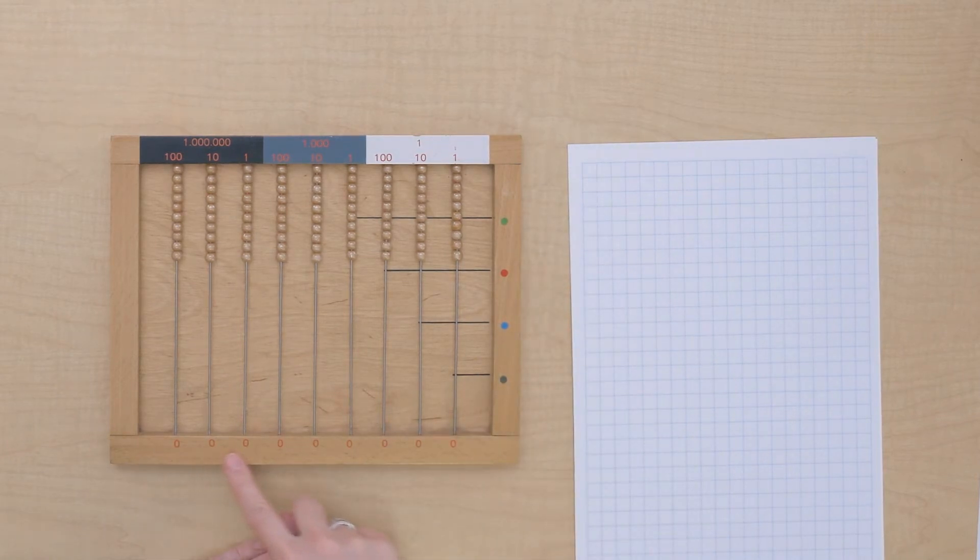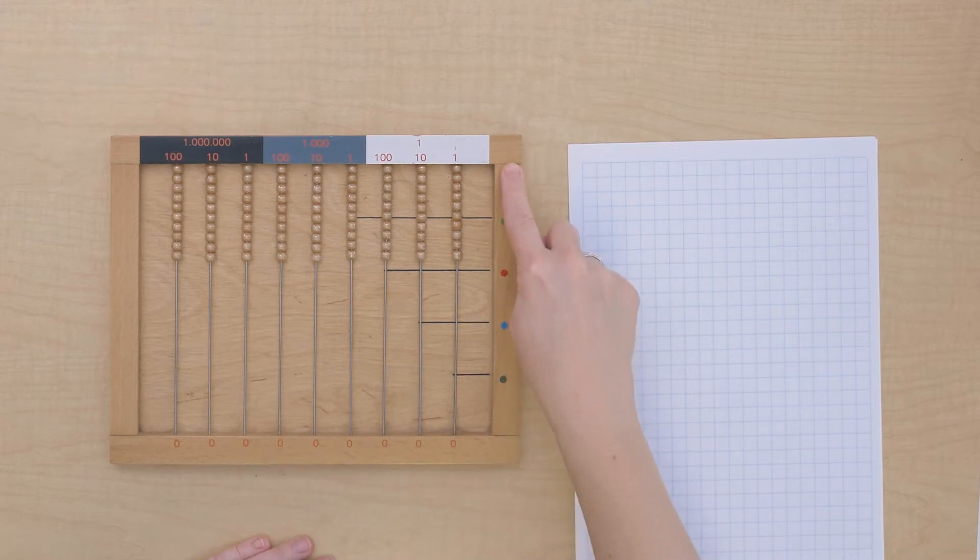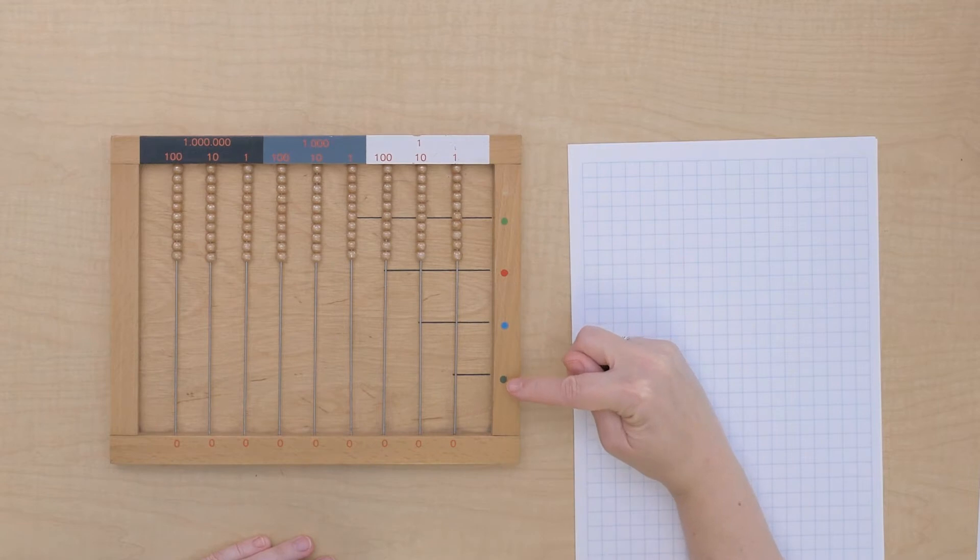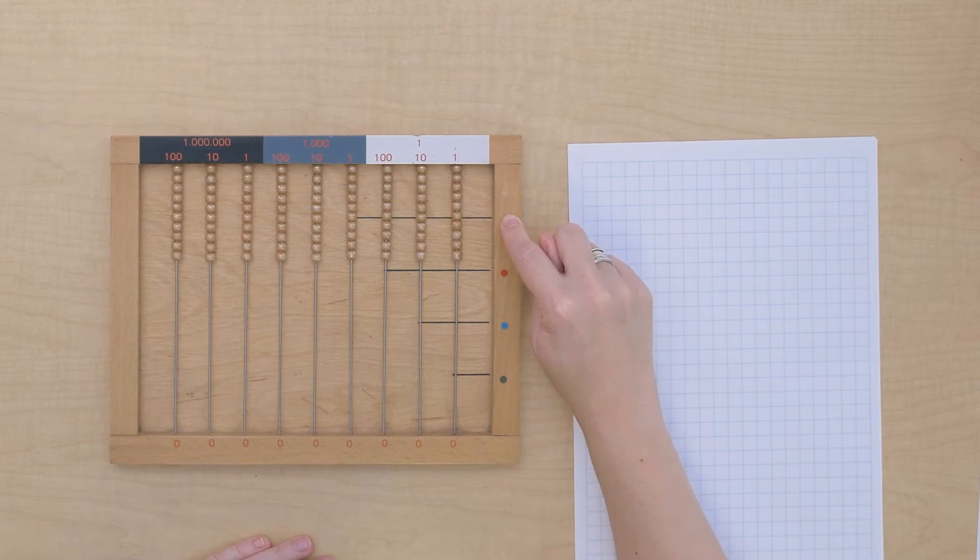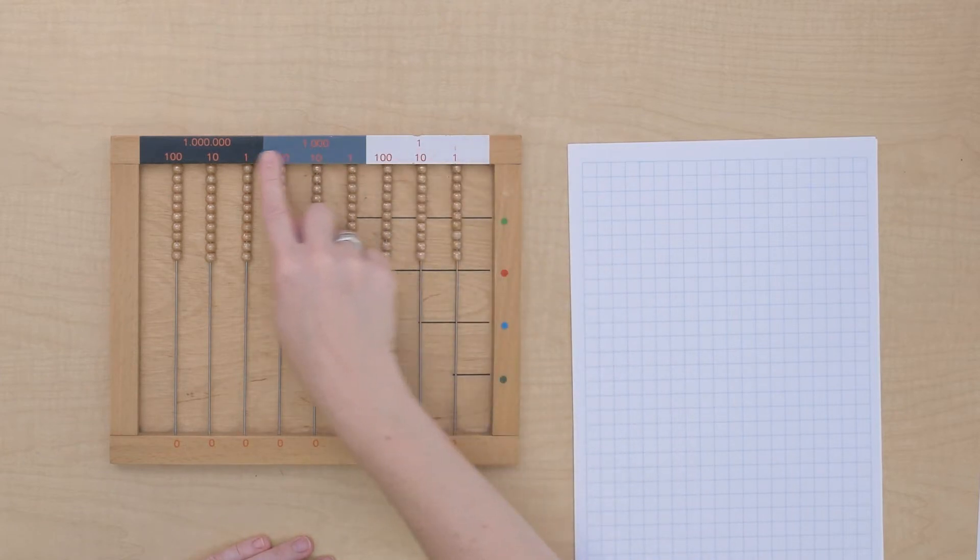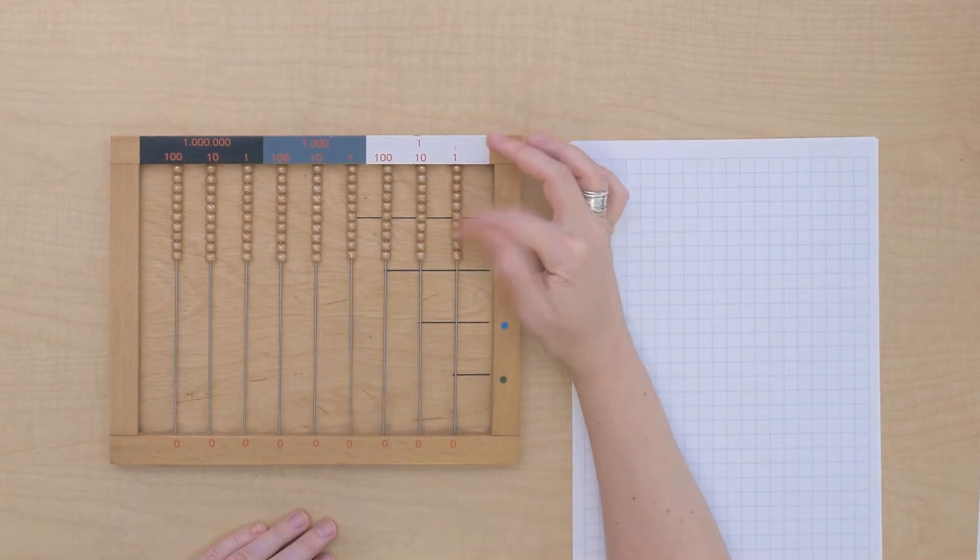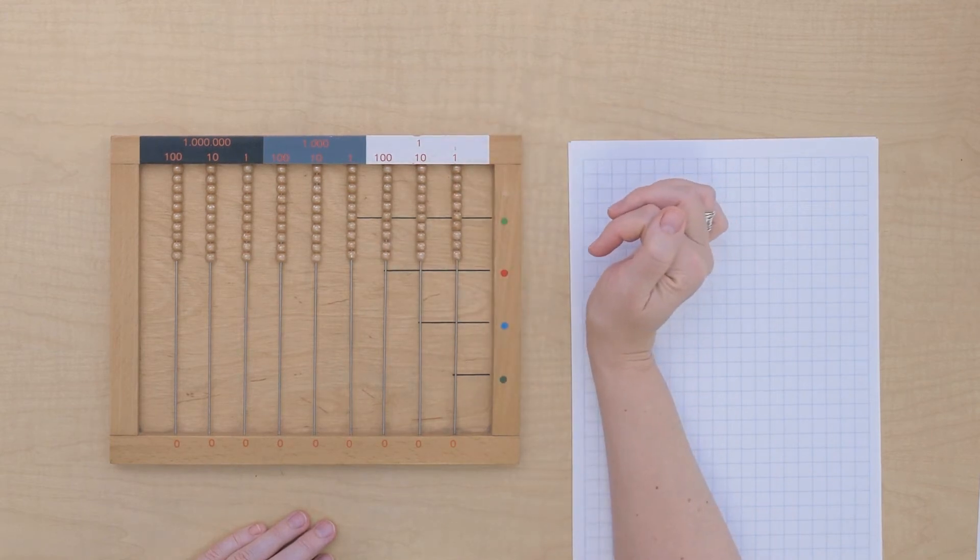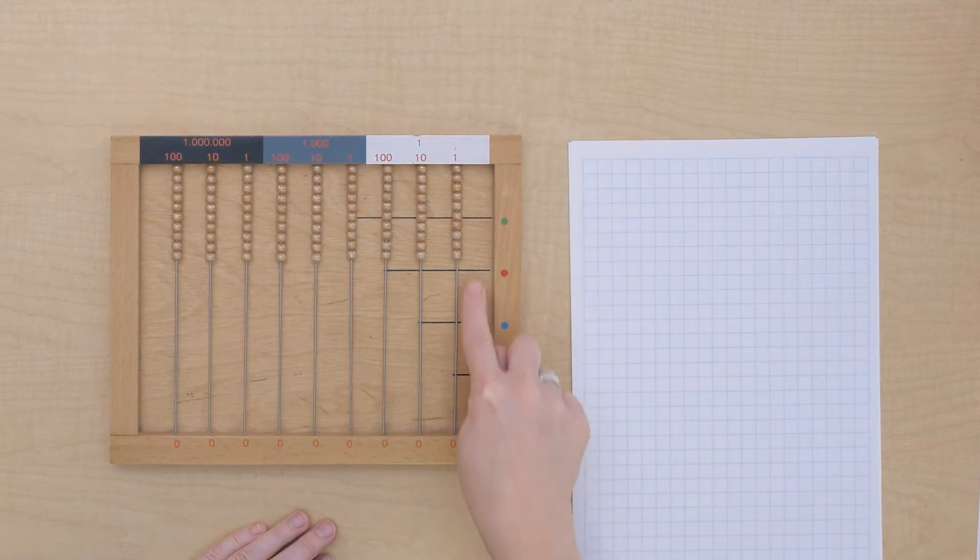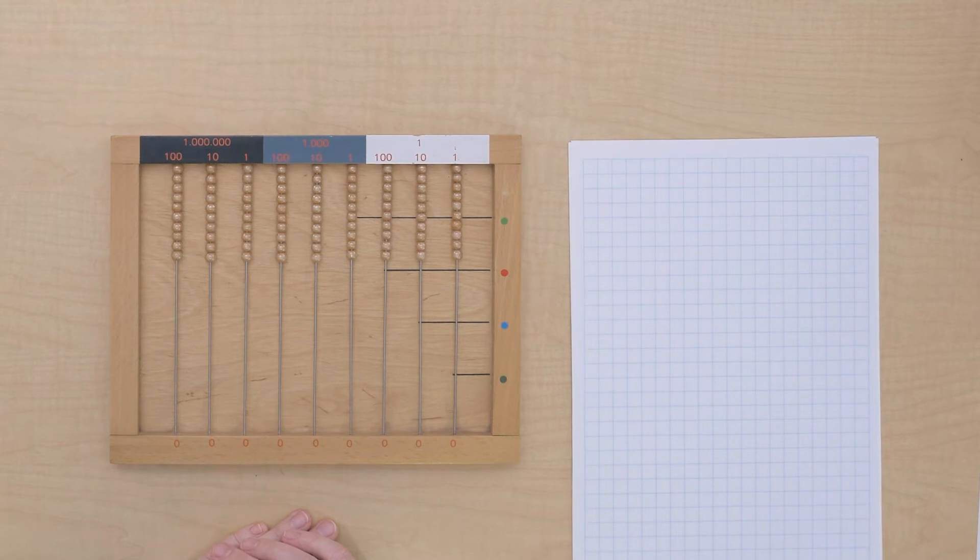Just like the checkerboard, we put the multiplicand down here at the bottom and the multiplier along the side. You can see we've got space for units, tens, hundreds, and thousands in our multiplier. And our multiplicand can go all the way to the hundred millions. It's important to keep the golden beads up here at the top—that means we have zero on the frame. These lines tell us where to start our multiplication with a given multiplier.